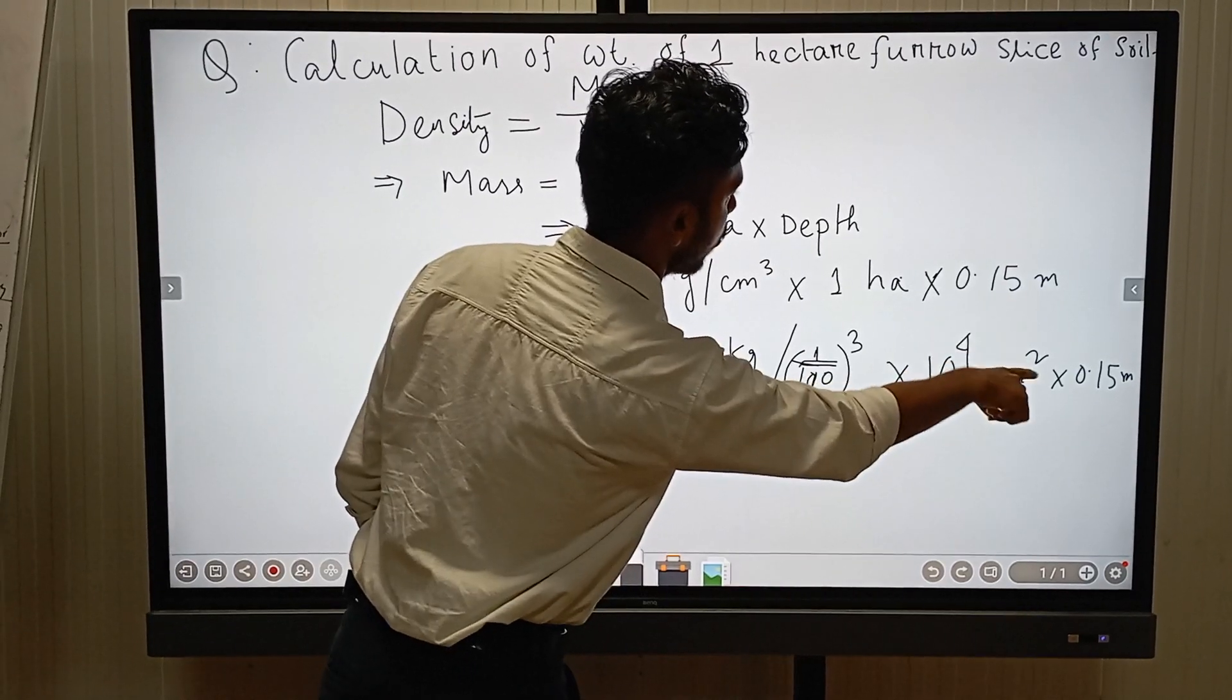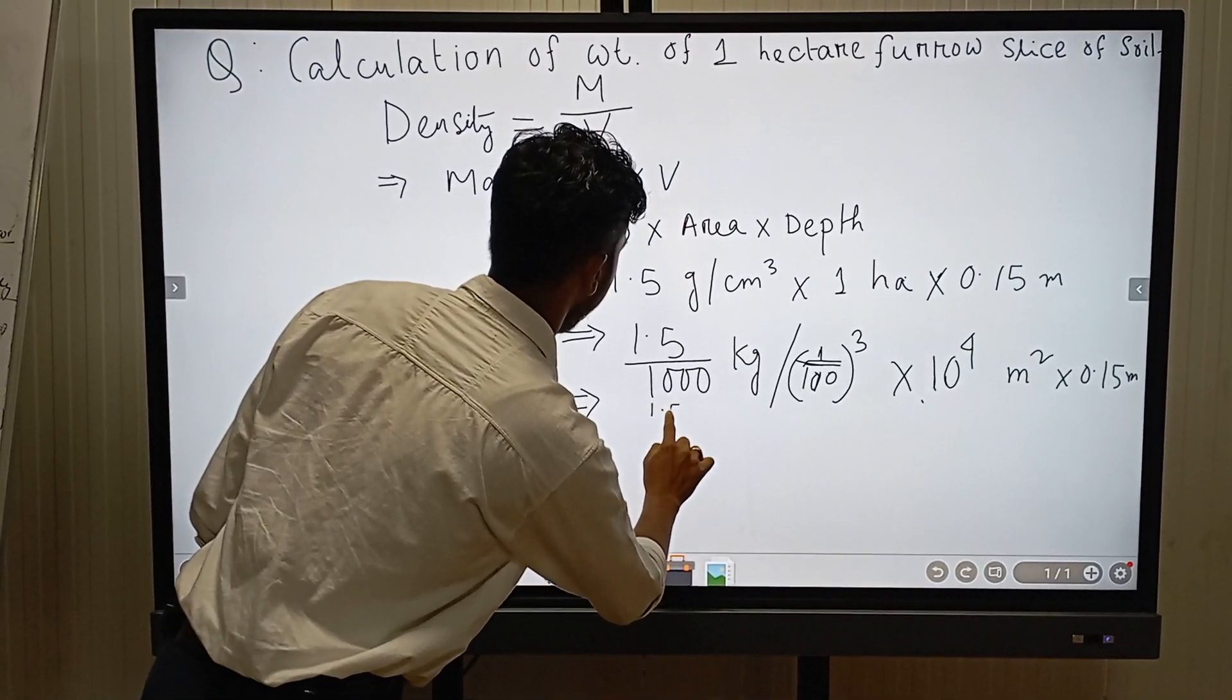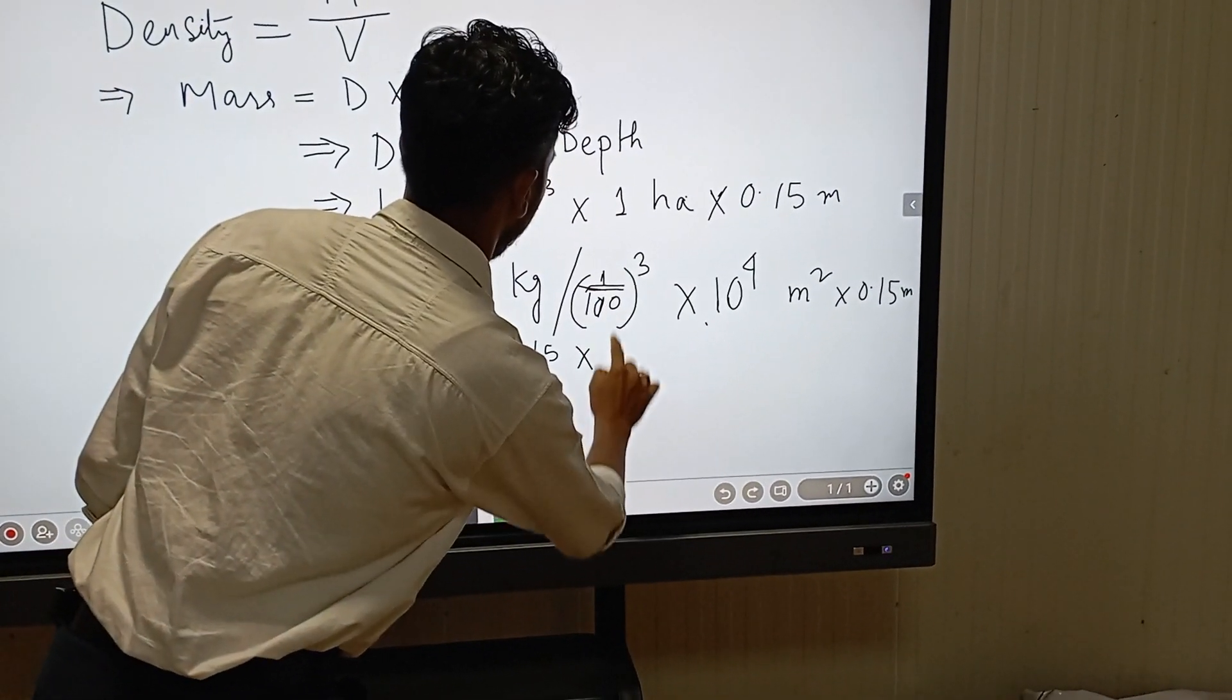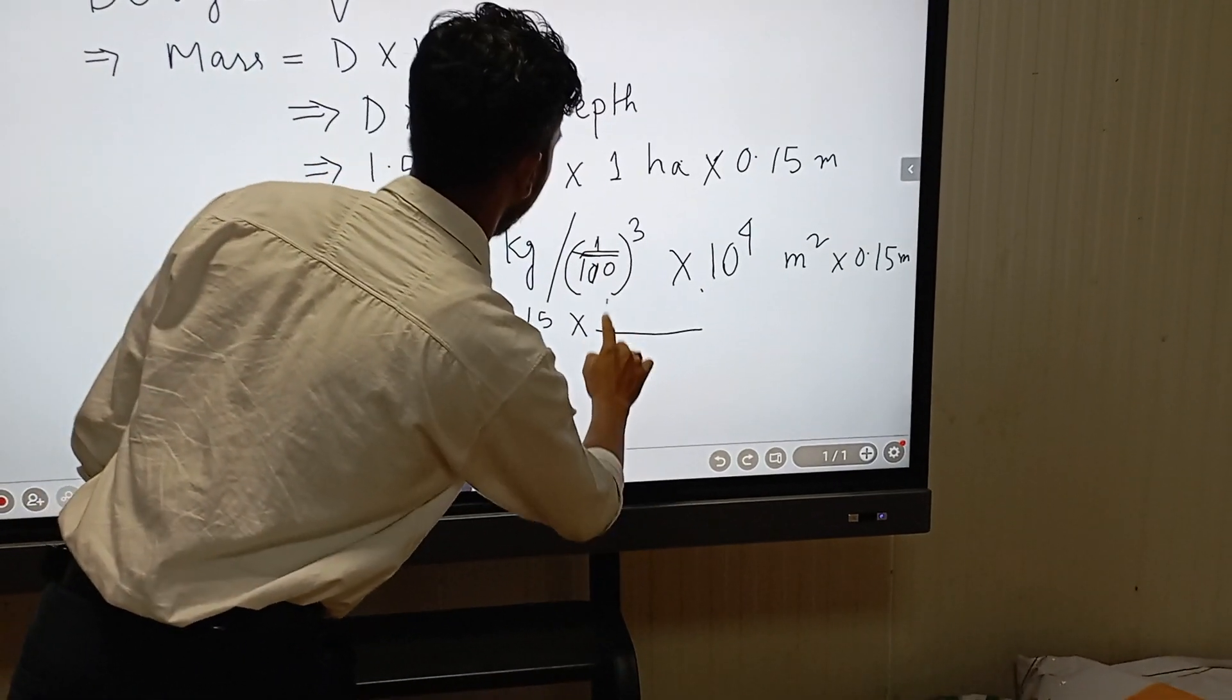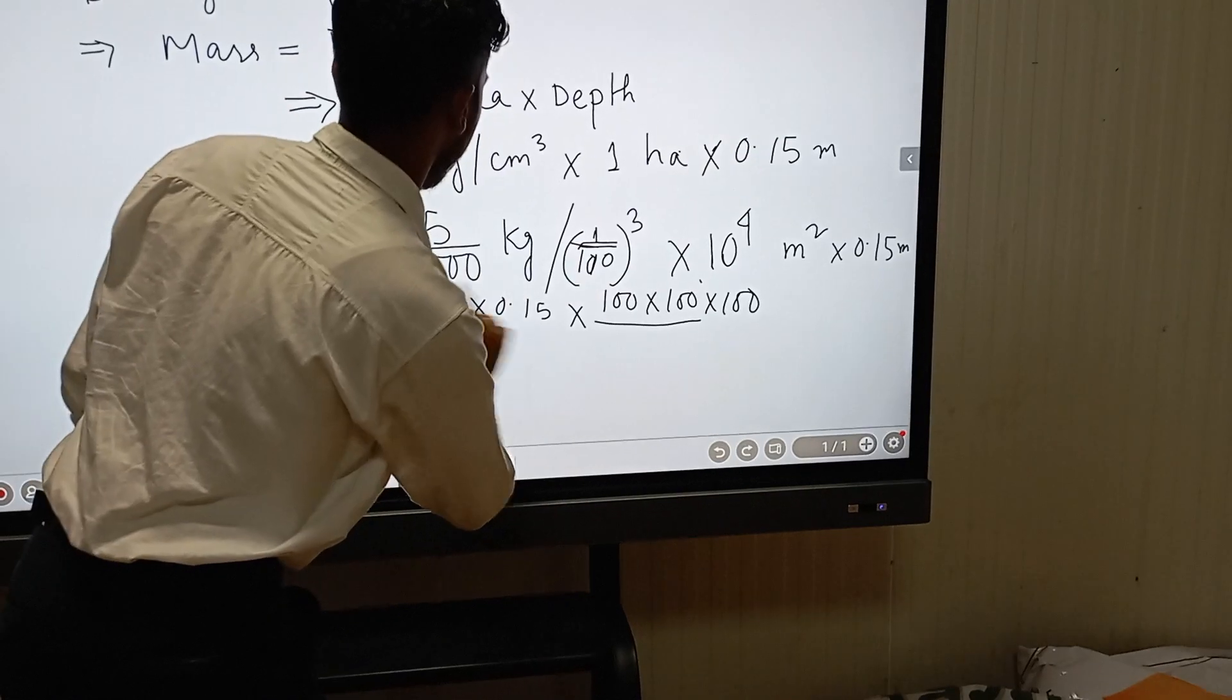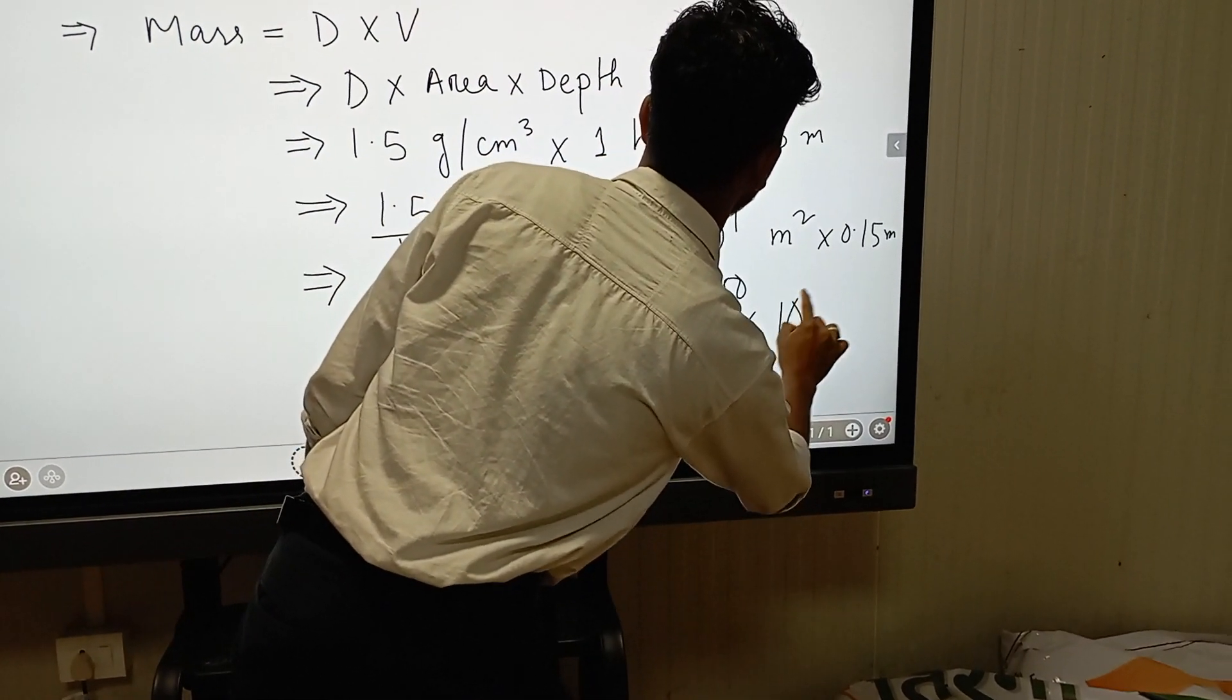It should be in cube, and 1 hectare equals 10 to the power 4 square meters, and depth should be as usual 0.15 meter. Then 1.5 times 0.15 here, and it should be in the numerator 100 times 100 times 100, and 1000 should be in denominator. Adding 10 to the power 4.